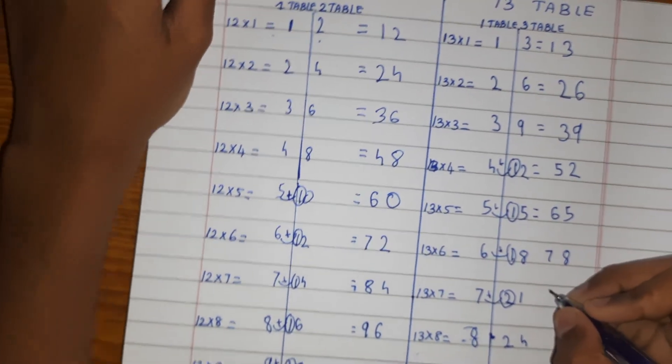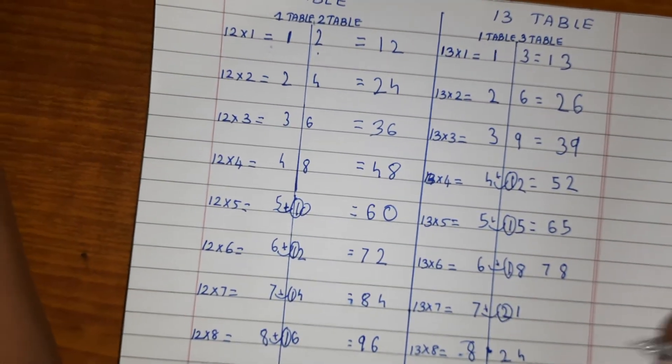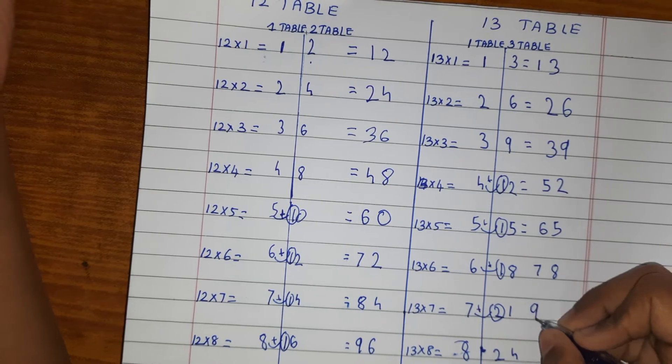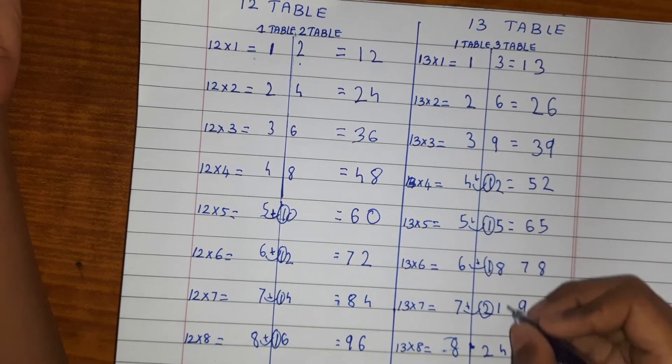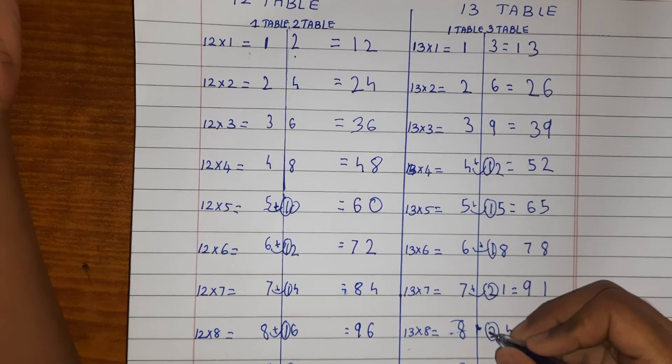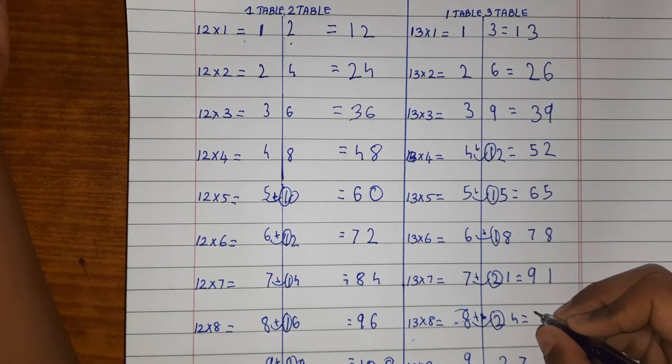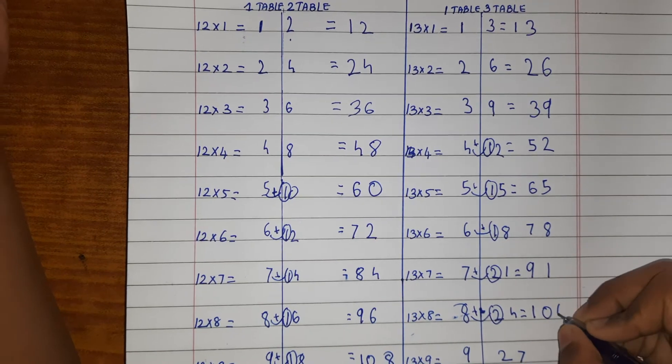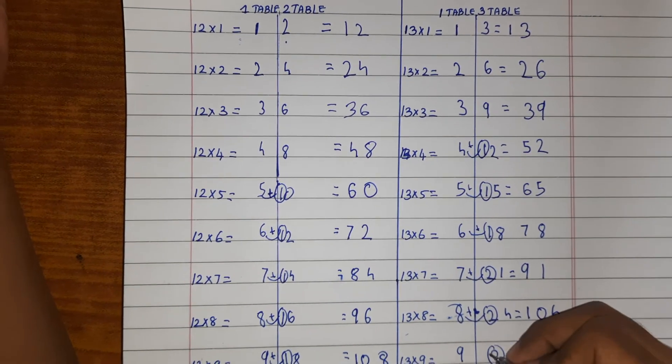Then, let me see, 65. And this one again, then 78. Then, okay, 10 plus 2, 9, so 91.